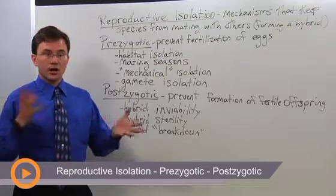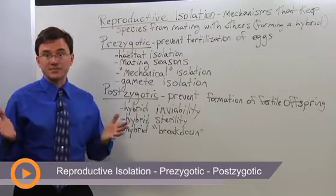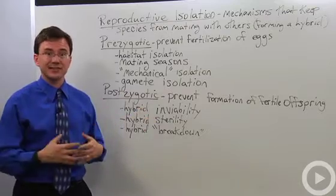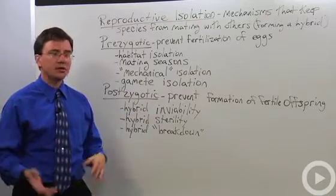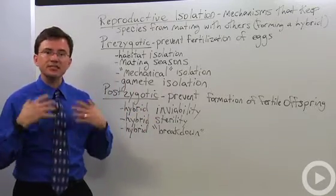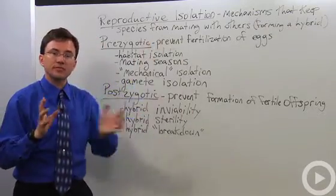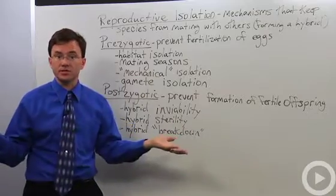In evolution, one of the major concepts is what is a species? A species is a group of organisms that are reproductively isolated from each other. Reproductive isolation depends on various mechanisms that keep one species from being able to successfully mate with other species.